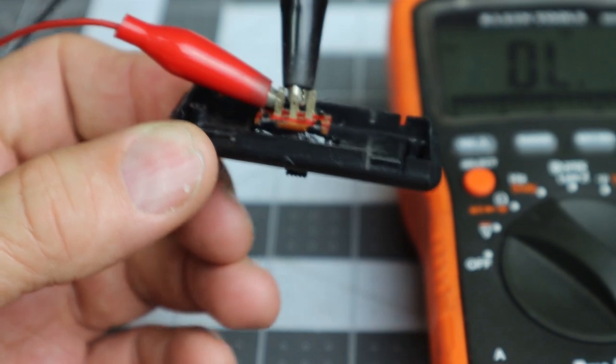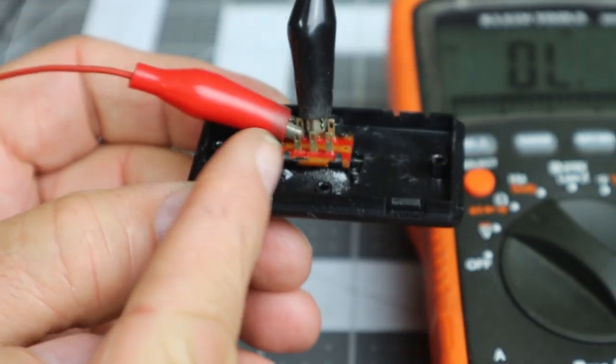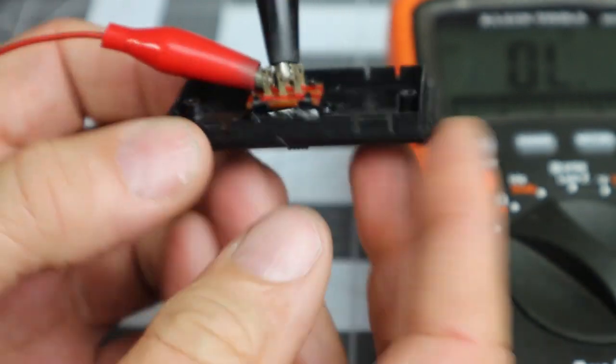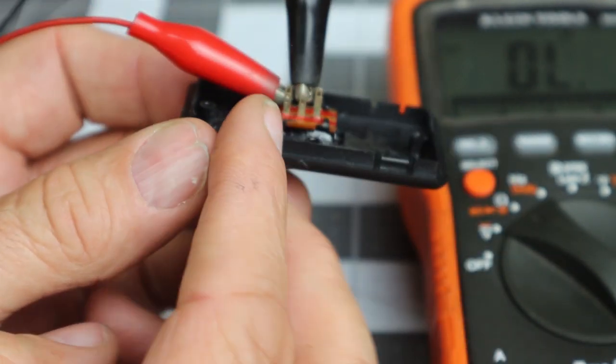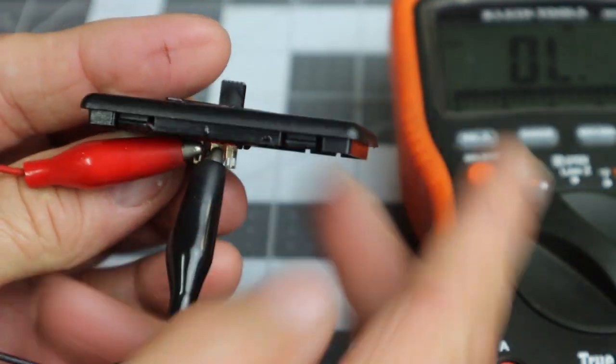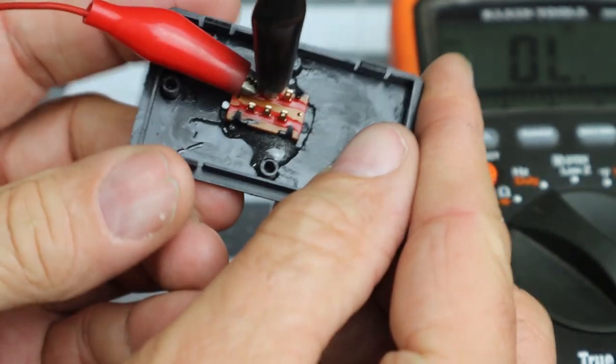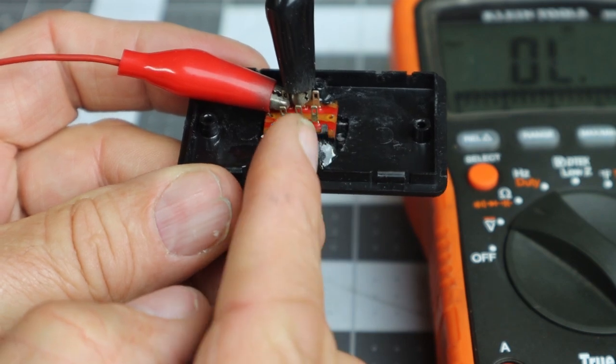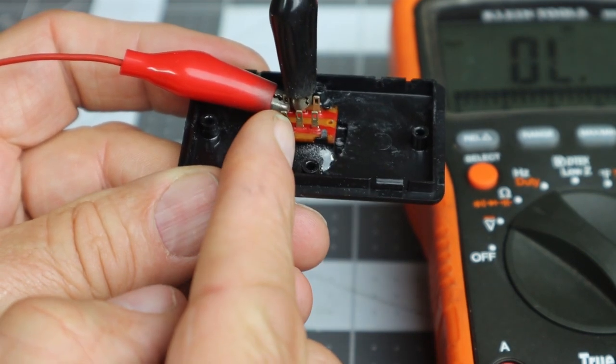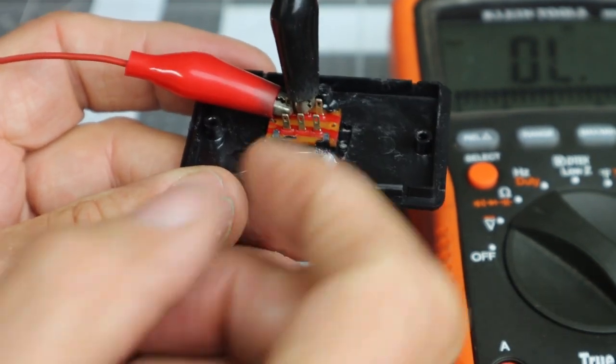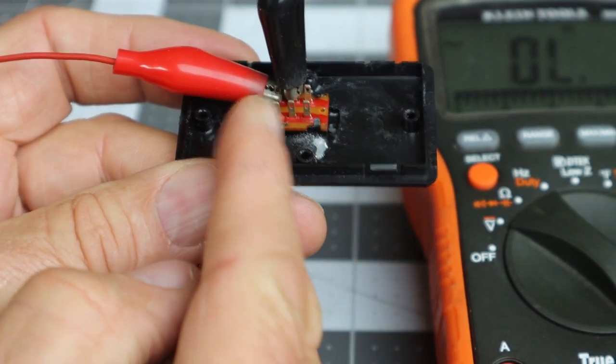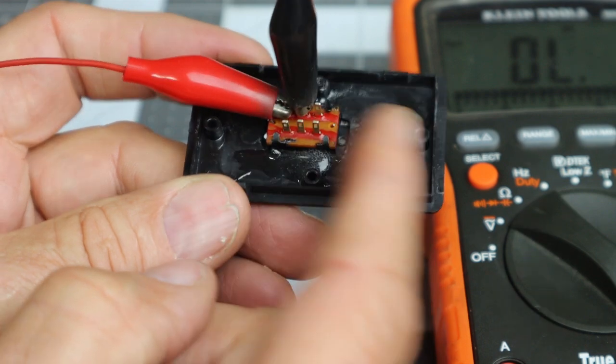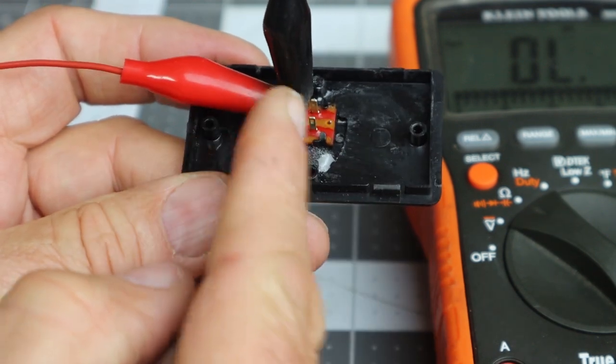You notice nothing happens, so I'm going to move one of the alligator clips to the center lead on the switch. Hopefully you could hear that, so that means the two leads in this orientation on the left side of the switch will allow you to toggle or switch the current on and off.